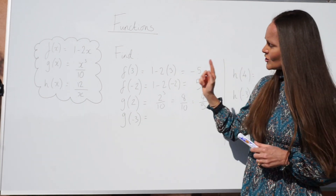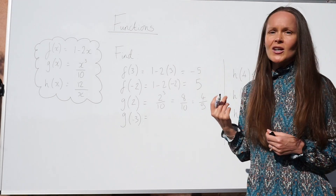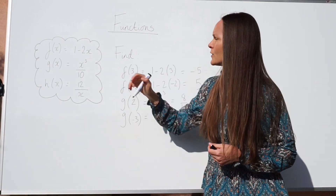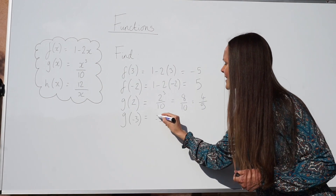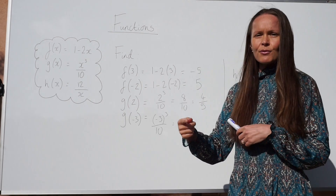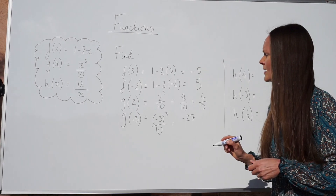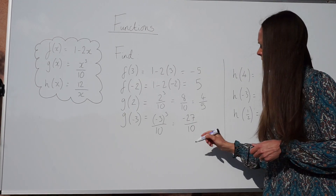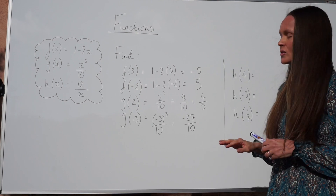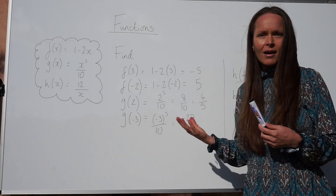For the next one, we have to work out g of negative 3. So we're using the same function g of x, but this time we change the letter x to negative 3. So instead of x cubed over 10, we have negative 3 cubed over 10. Negative 3 cubed is negative 3 times negative 3 times negative 3, which is negative 27. Divided by 10 we can't simplify, so we leave it as negative 27 over 10, or as a decimal, negative 2.7.